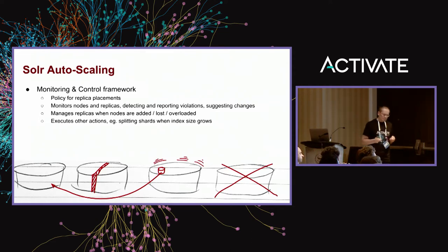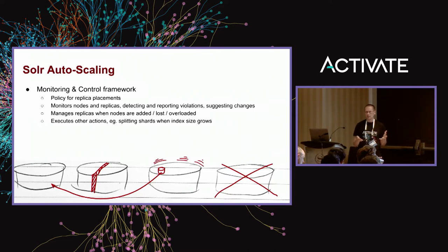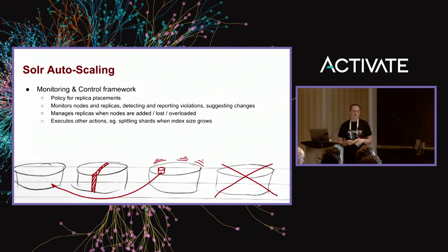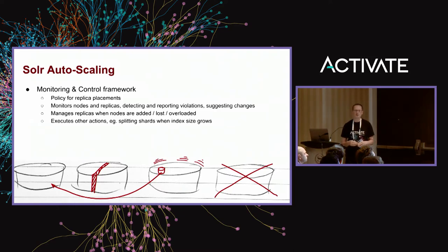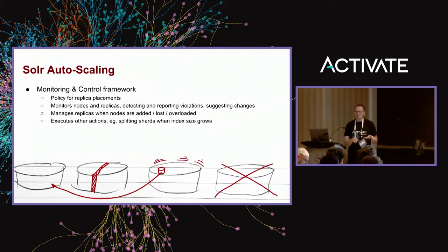First, a brief recap of what Solr autoscaling is. Solr autoscaling is a monitoring and control framework that makes sure your system is stable and cluster resources are used in an optimal way. It uses policy definitions — a set of rules and preferences that define where to place replicas on which nodes and in what amounts. It also monitors nodes and replicas, detects changes in cluster state such as lost nodes, lost replicas, or overloaded nodes, and suggests actions to resolve these violations.